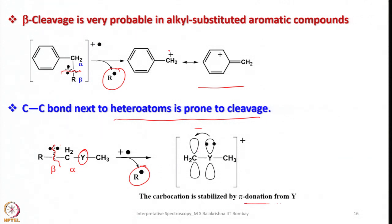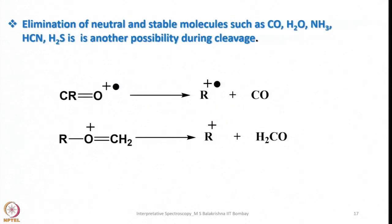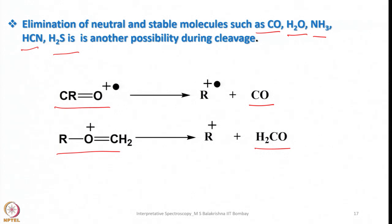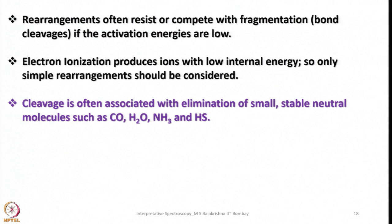C-C bonds next to heteroatoms are prone to cleavage. If a heteroatom is present in the side chain, the adjacent C-C bond cleaves: a radical comes out and the carbocation is stabilized by pi donation from the lone pair. The elimination of neutral stable molecules such as CO, H2O, ammonia, HCN, and H2S is another possibility during cleavage. For example, CO can be eliminated from a carbonyl compound, or H2CO can be lost from a formyl-containing species.